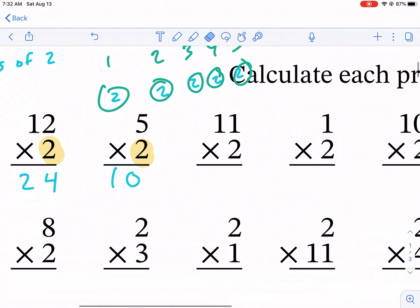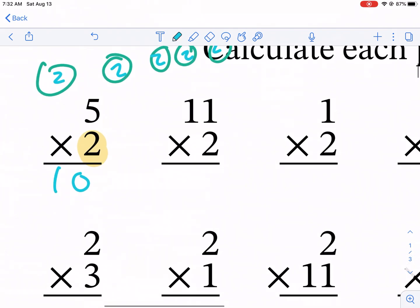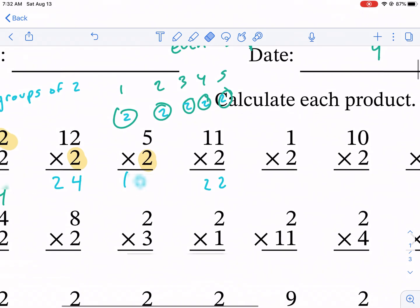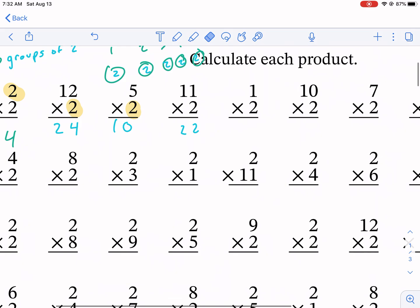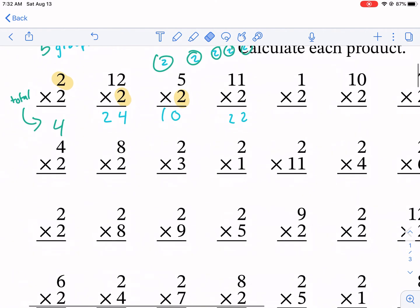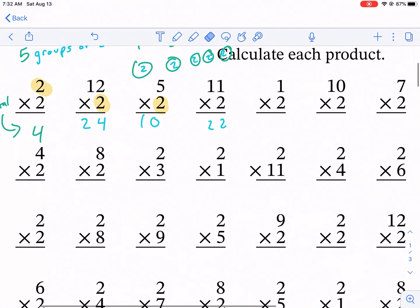The same thing with 11: 11 times two, we're just going to double one. This was the first one, double one, and then we're going to double this one and write the number next to it, and it's 22. So it's just doubling all these numbers, and it doesn't matter if we have the two written on the top or the bottom—it's still the same principle.